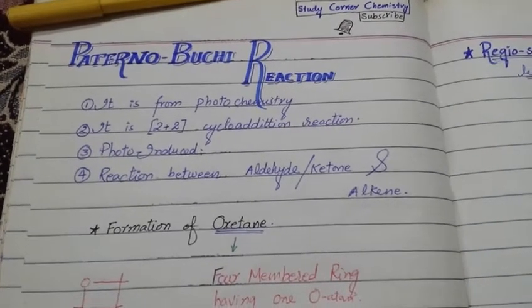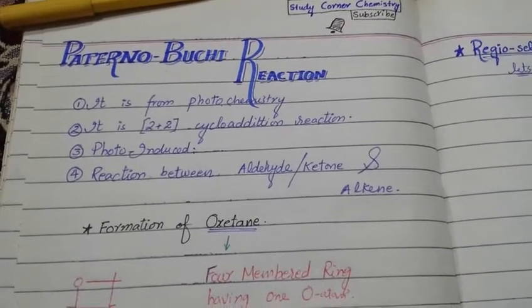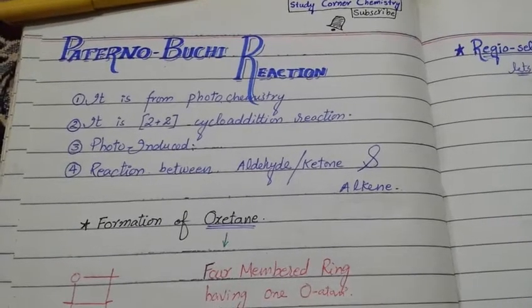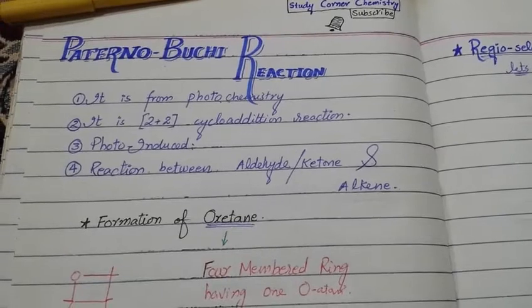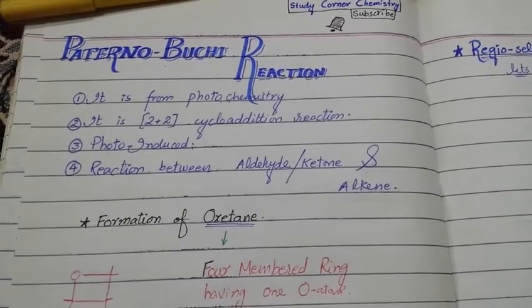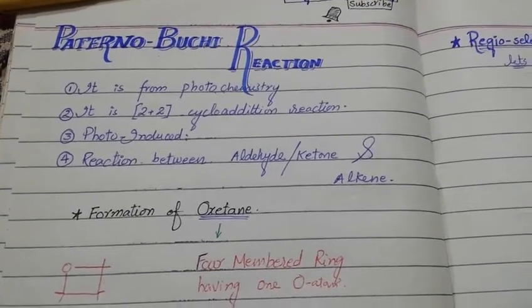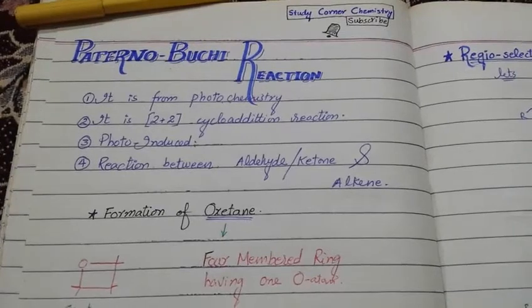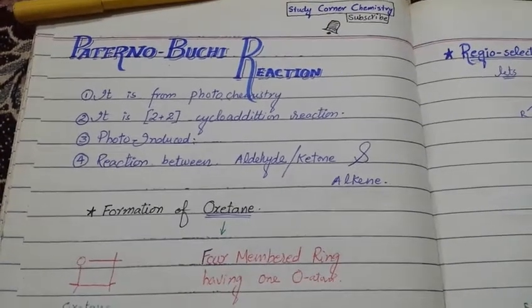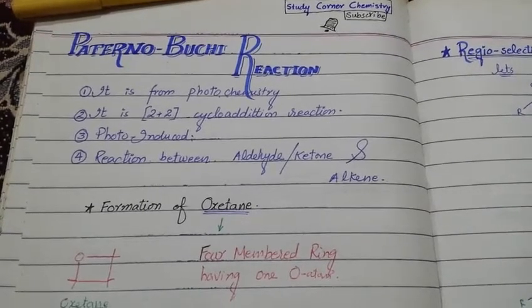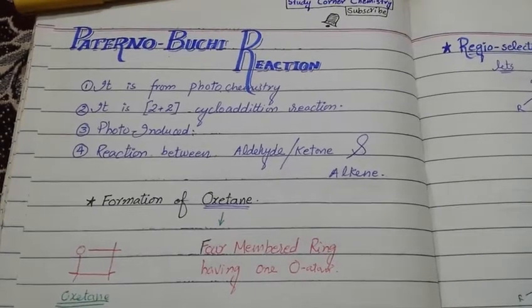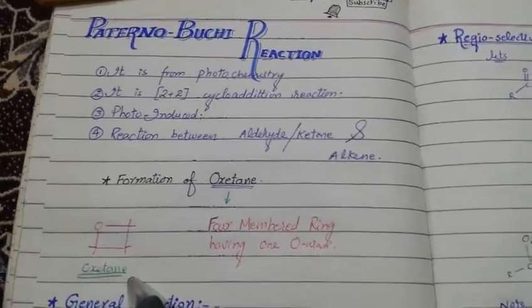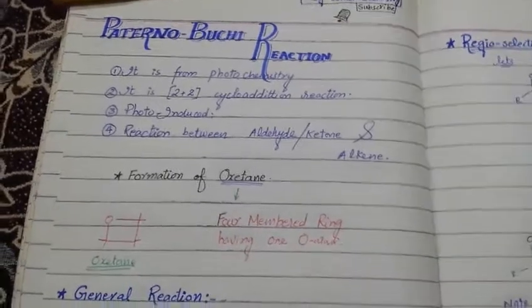Let's start. What is the Paterno-Büchi Reaction? Paterno and Büchi are scientists. This is a very famous photochemical reaction. In this reaction, we have a 2+2 cycloaddition — a reaction between 2 pi electrons and 2 pi electrons. The reactants are an aldehyde or ketone reacting with an alkene. The product is a 4-membered ring containing an oxygen atom, which we call an oxetane. So remember, wherever you get an oxetane product, that is a Paterno-Büchi Reaction.